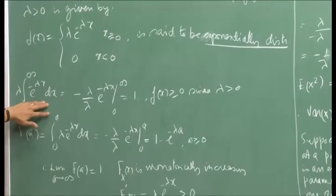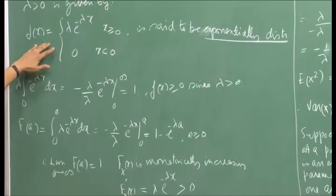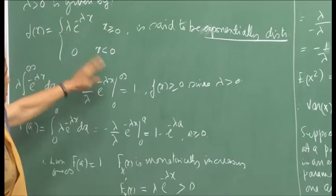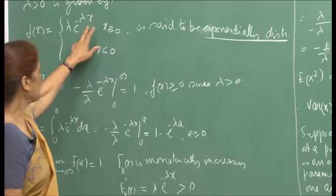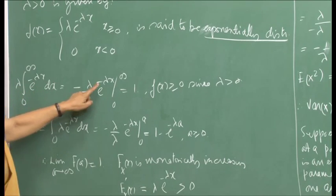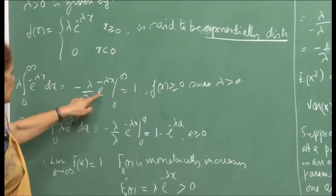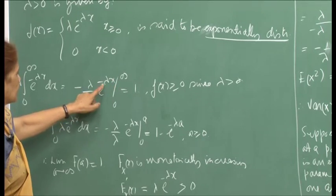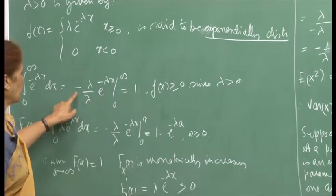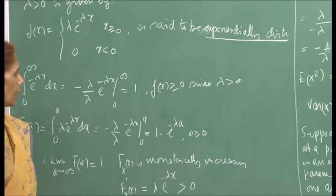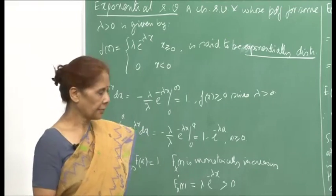We validate that this is indeed a PDF. It is non-negative since lambda is non-negative. The integral from 0 to infinity of lambda e raised to minus lambda x dx equals minus e raised to minus lambda x from 0 to infinity. At infinity it is 0, at 0 it is 1, and with the minus sign, minus minus plus, so this equals 1. This is indeed a PDF.